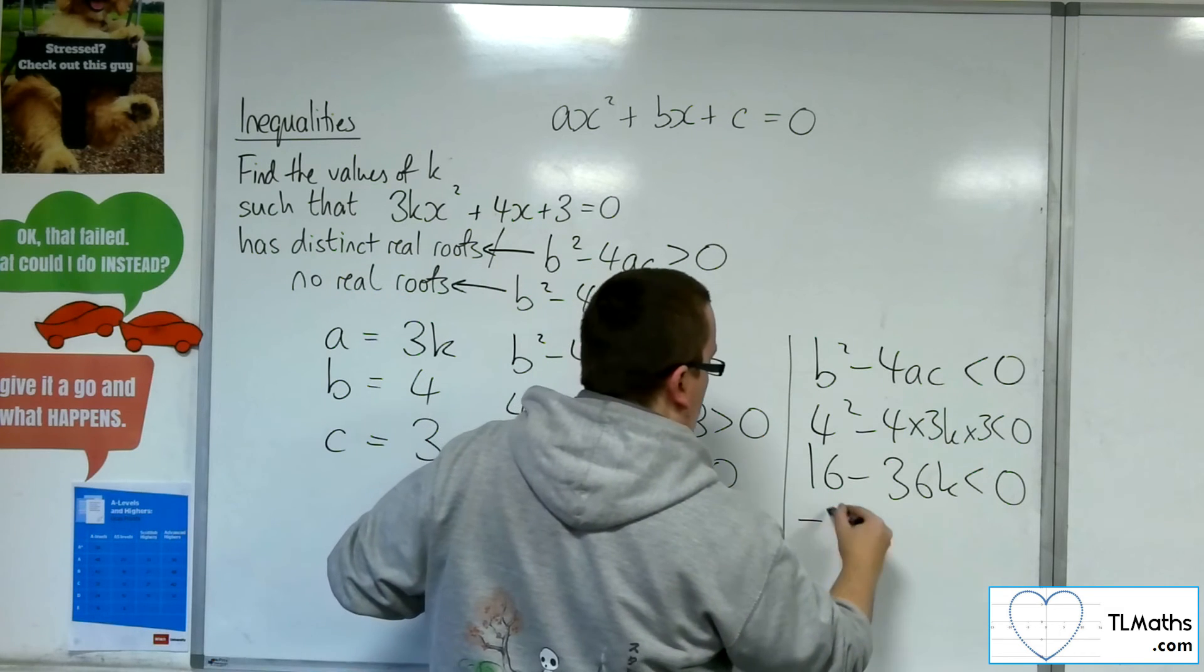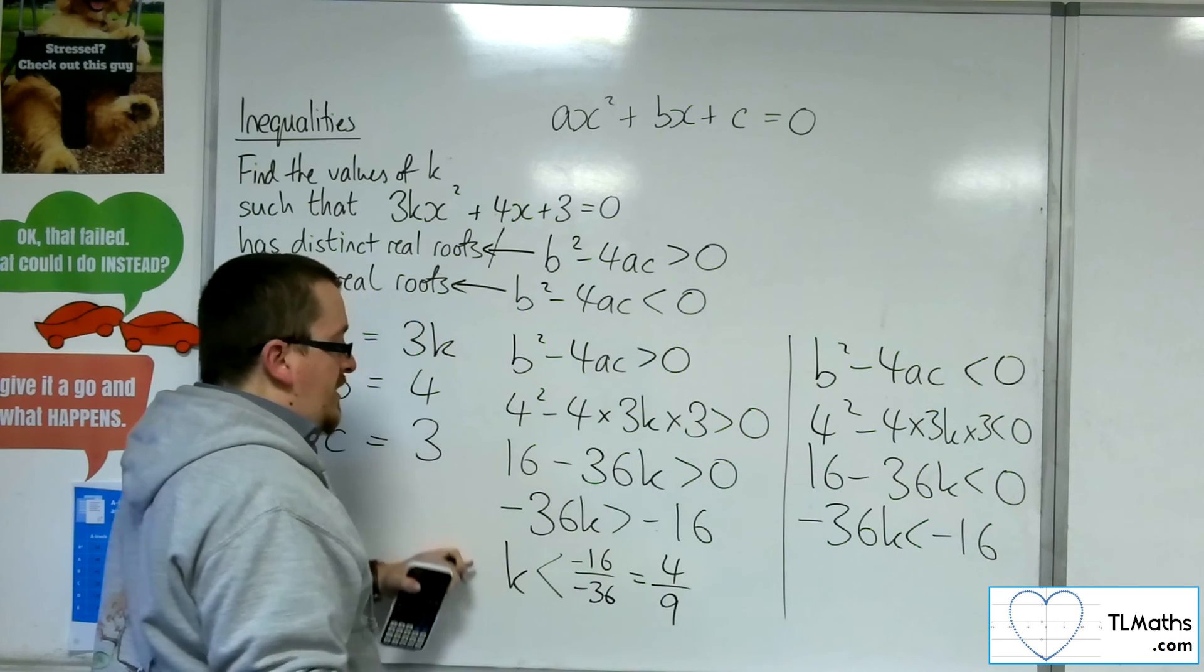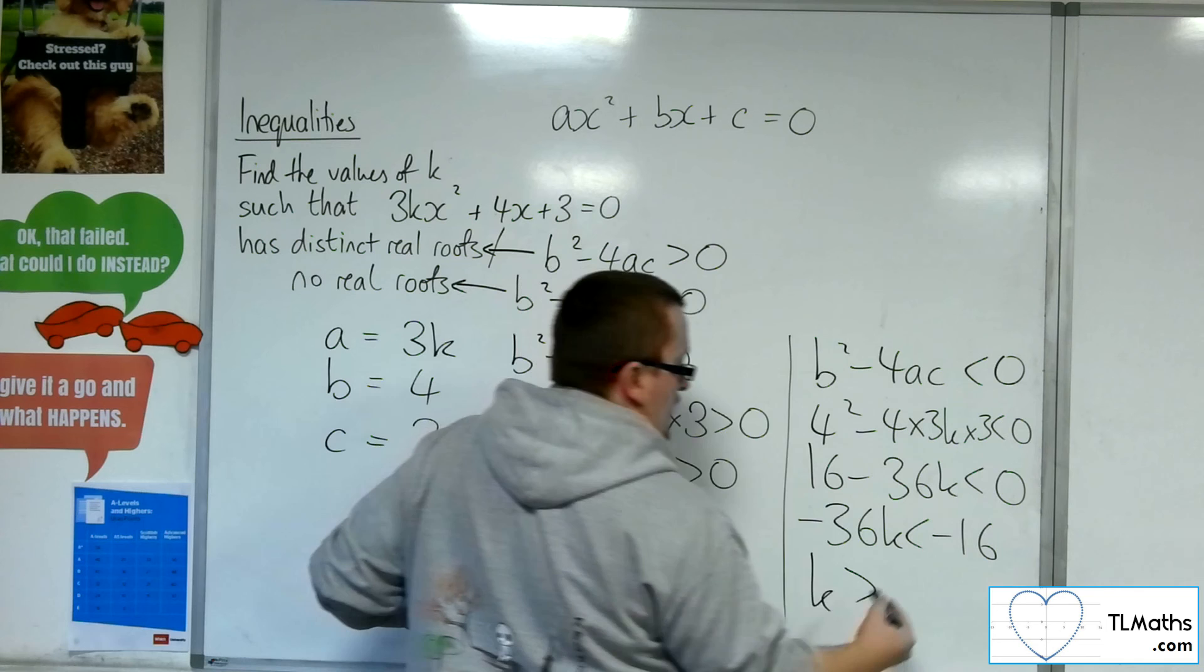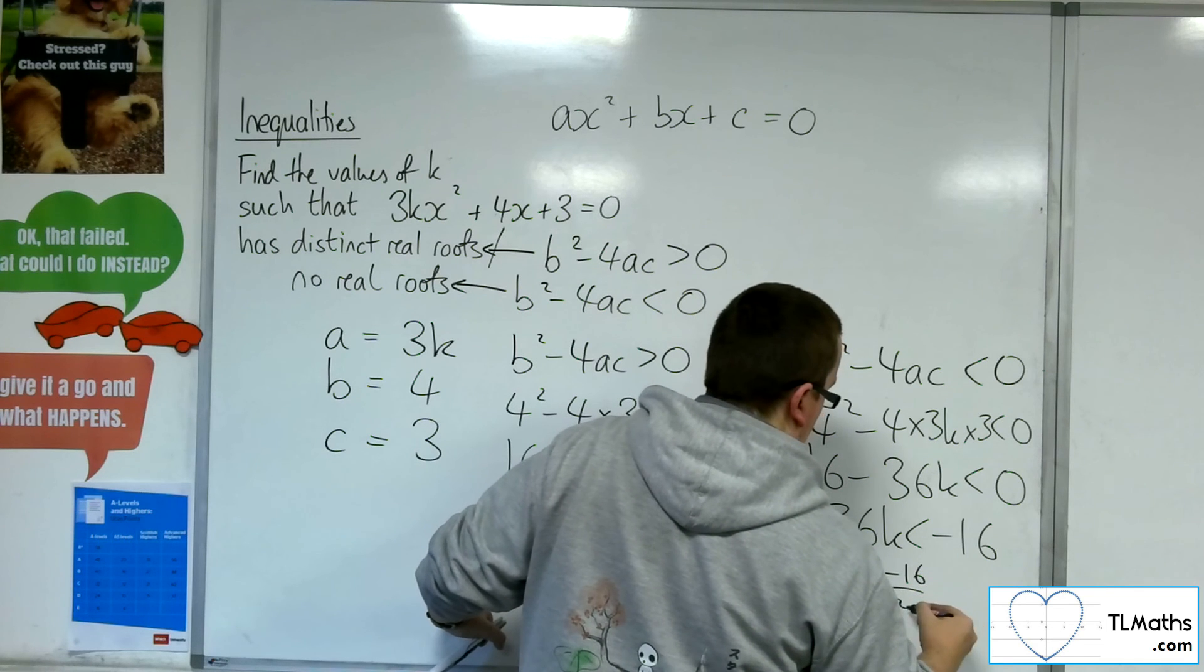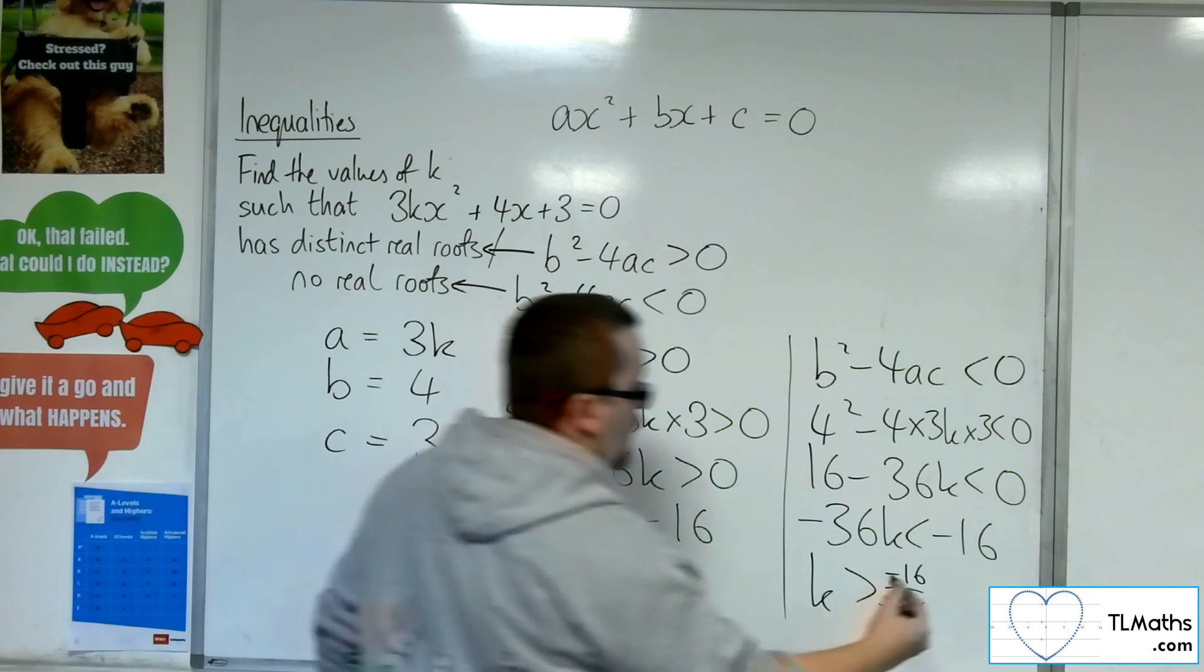I can take the 16 from both sides, just as I did before, then I can divide both sides by minus 36, which will reverse the direction of the inequality symbol. Like so, and that's just 4 ninths.